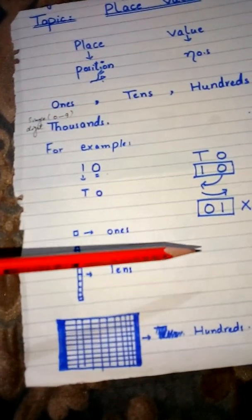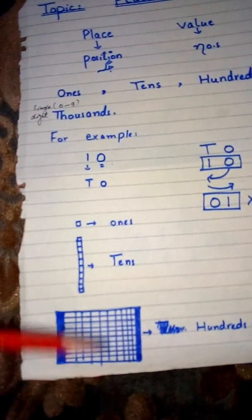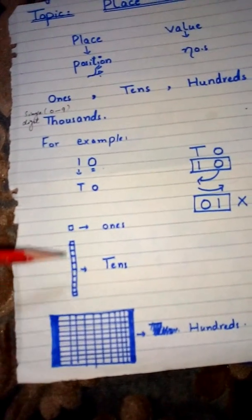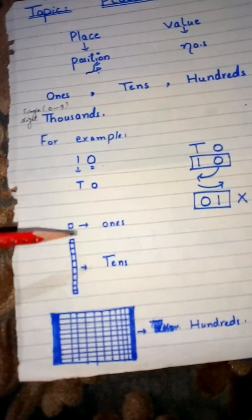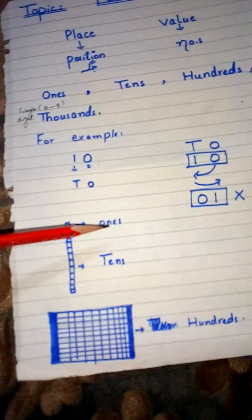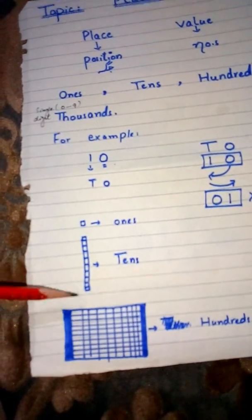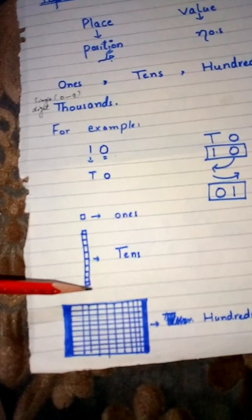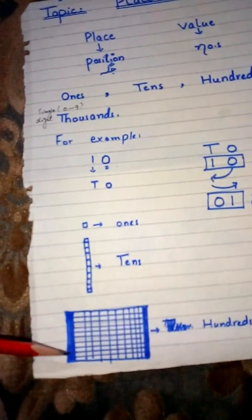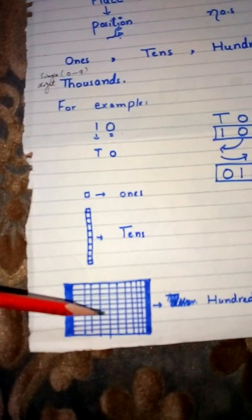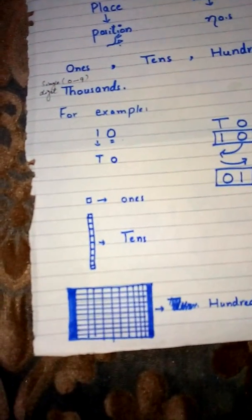آپ لوگ کی book میں ones, tens, hundreds کے لیے کچھ shapes دی ہیں identification کے لیے۔ A single small block represents ones. A long strip with 10 parts represents tens. A large block with 100 parts represents hundreds place value.